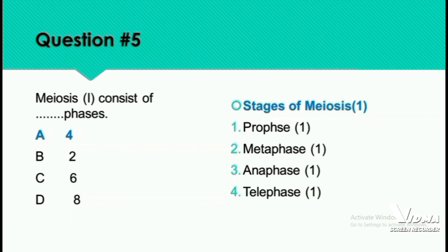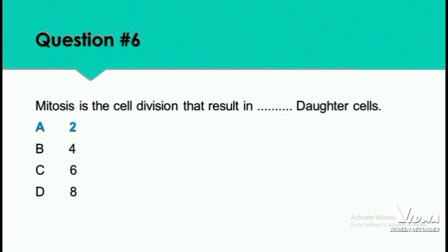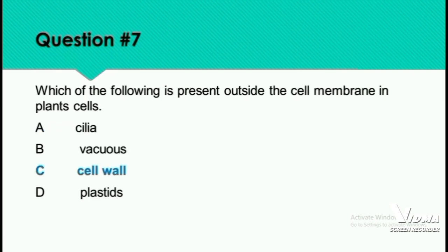Question 6: Mitosis is the cell division that results in how many cells? In Meiosis 2, we have two daughter cells. Question 7: Which of the following is present outside the cell membrane in plant cells? In plant cells, the cell wall is outermost. In animal cells, the cell membrane is outermost.